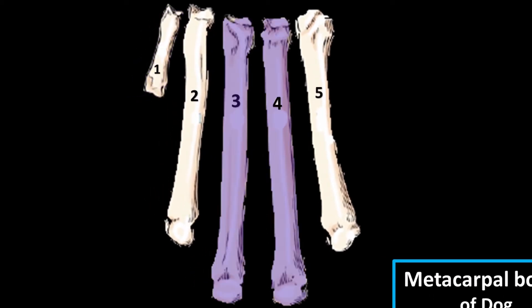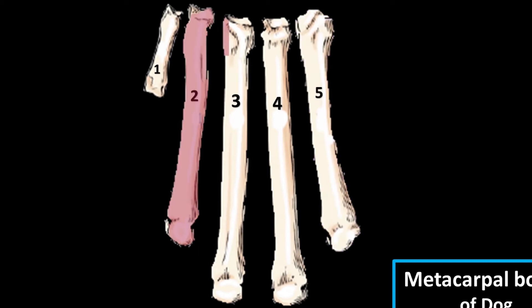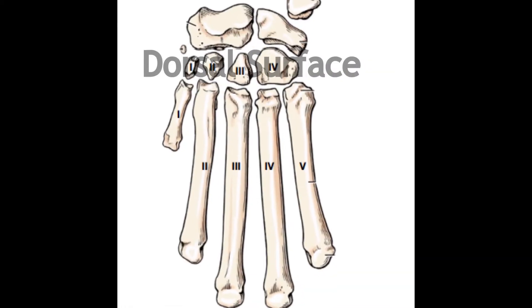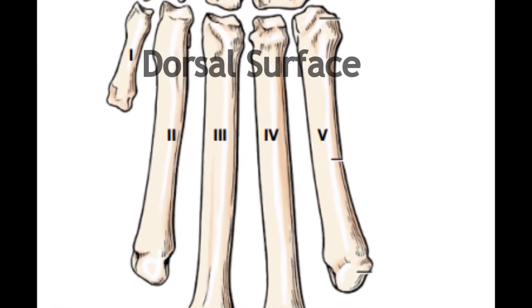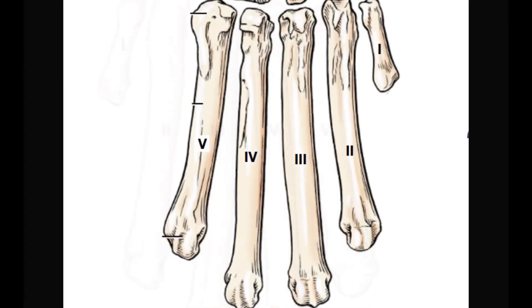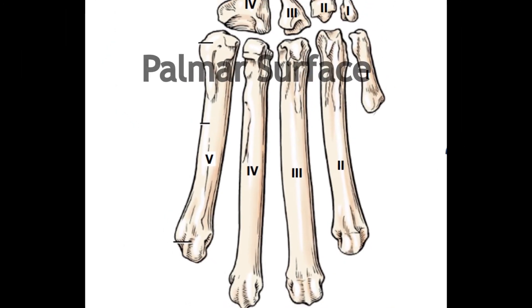The fifth metacarpal bone is the widest at the proximal end and is slightly shorter than the second metacarpal bone. These bones have a convex dorsal surface and a concave palmar surface.